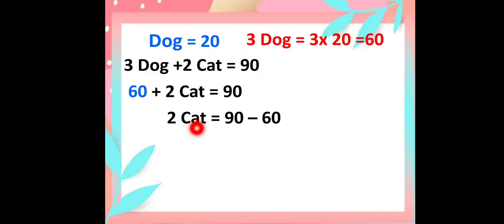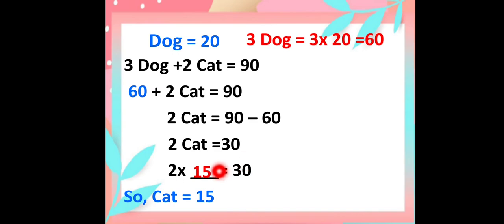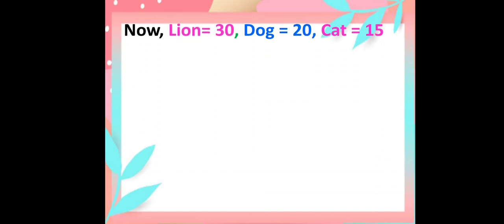Shifting 60 to the right, I get 2 times the cat is equal to 90 minus 60, that is equal to 30. Now 2 times what number is equal to 30? That is 15. So the value of 1 cat is equal to 15. Till now we have found that 1 lion is equal to 30, 1 dog is equal to 20, and 1 cat is equal to 15.